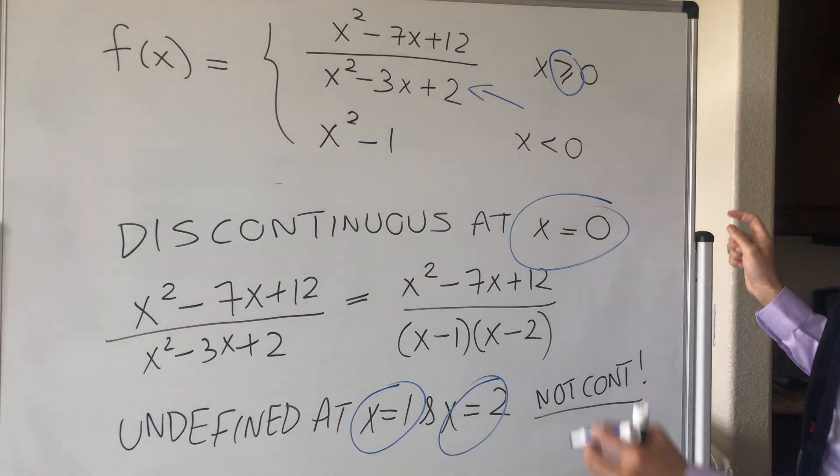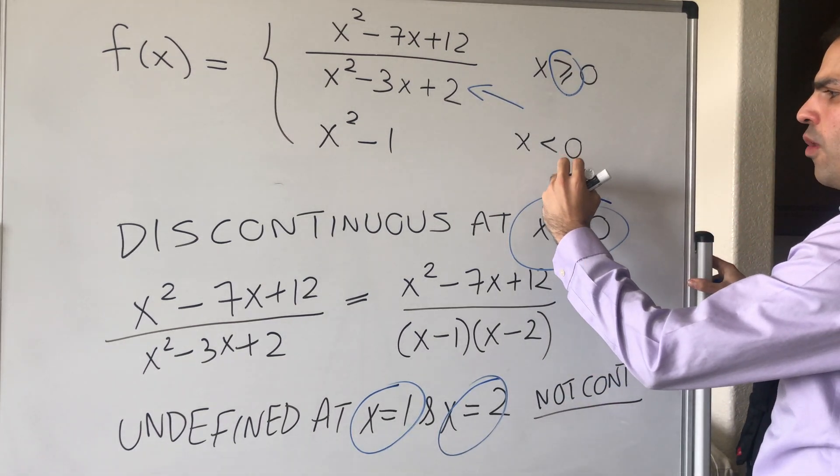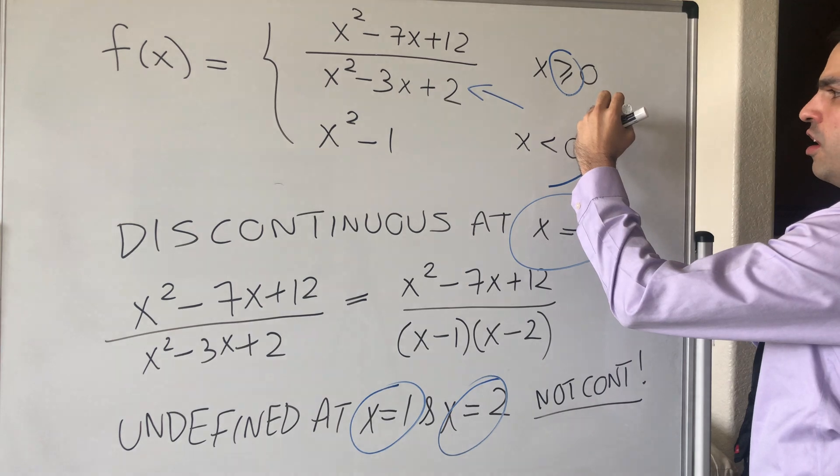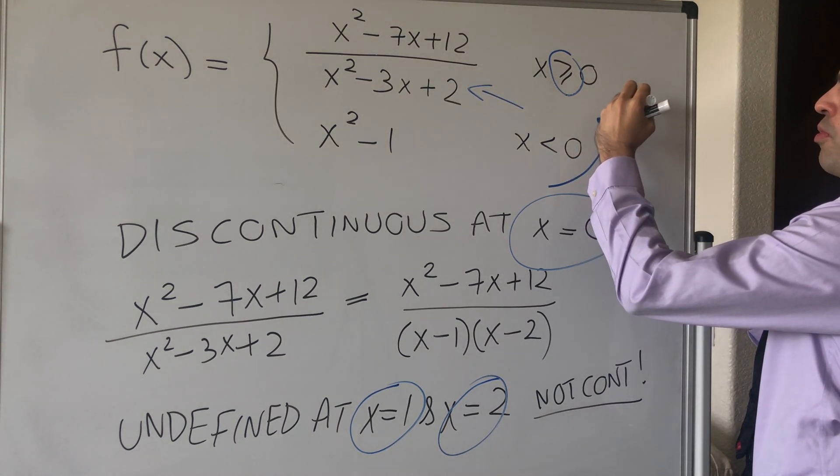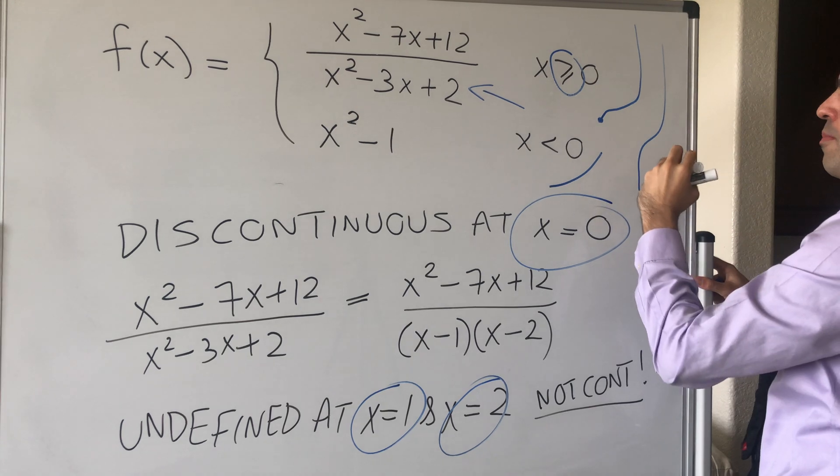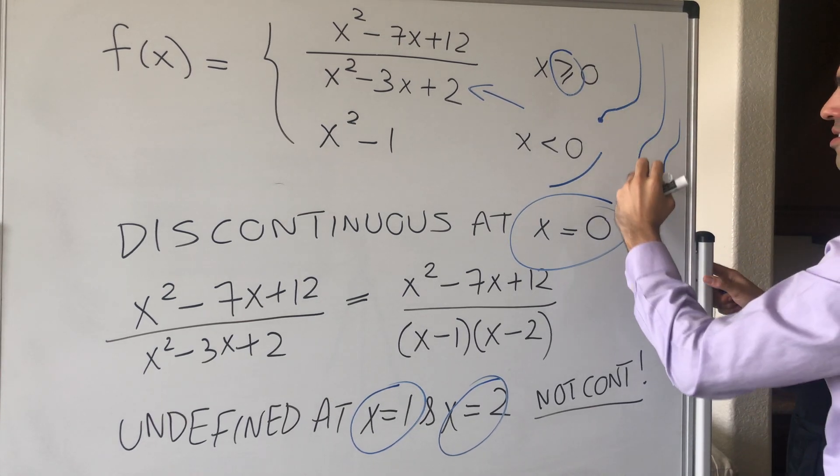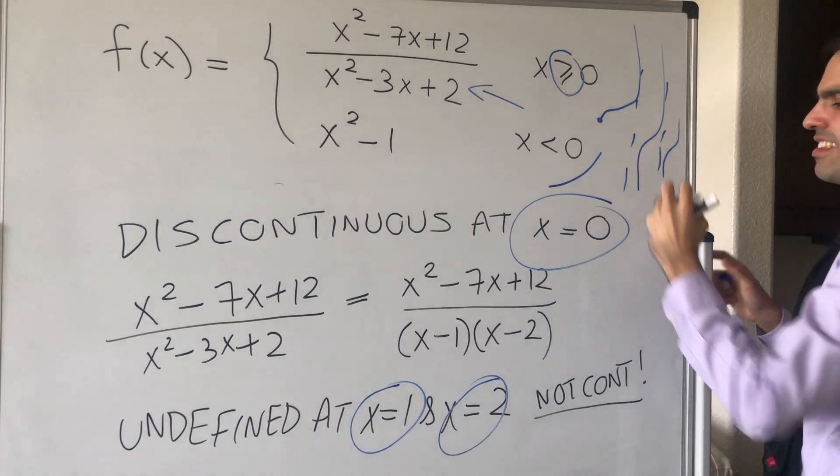So pretty much what happens with this function is, at 0, it has this jump, and then it probably blows up at 1, and then blows up at 2, and it's also not continuous there.